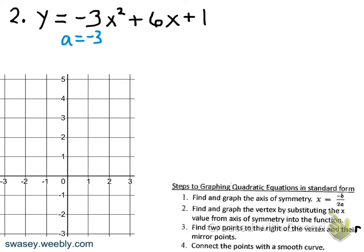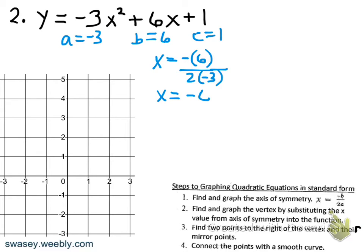This time a is negative 3, b is 6, and c is 1. We find the axis of symmetry: x equals negative b over 2a. The negative of 6 is negative 6 on top; 2 times negative 3 is negative 6 on the bottom. Negative 6 divided by negative 6 is 1, so we again have axis of symmetry x equals 1. We found the axis of symmetry and graphed it; now step 2 is to find the vertex by replacing x with that value.